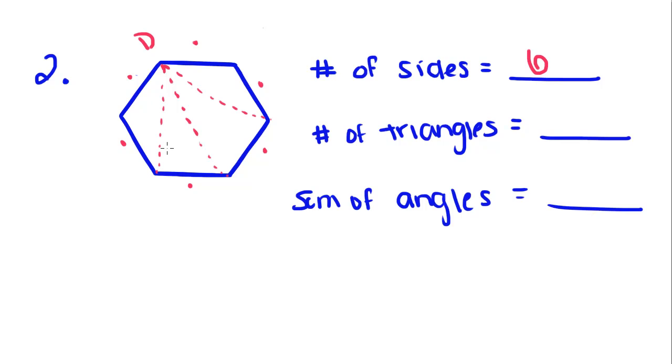Drawing three diagonals leaves us with one, two, three, four triangles. 4 multiplied by 180 gives us a total of 720 degrees. Each one of these angles added together equals 720.